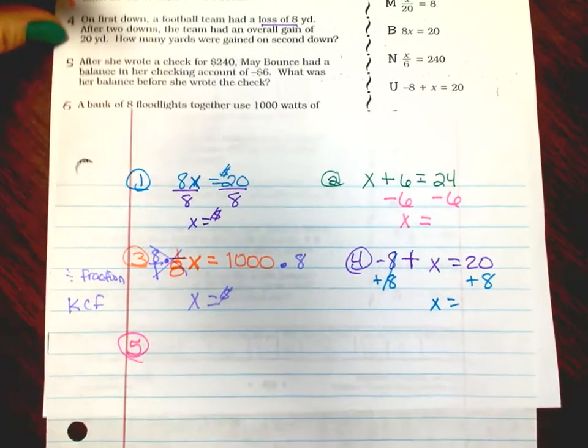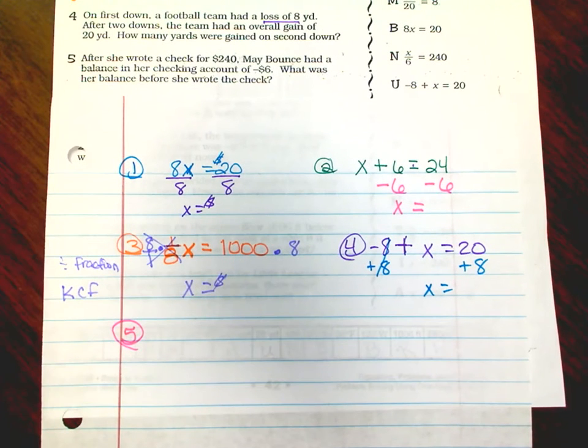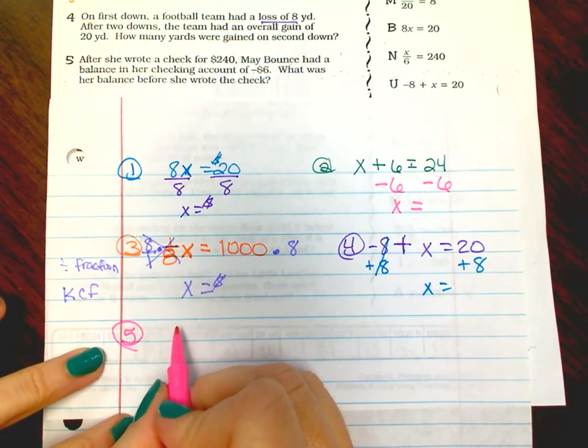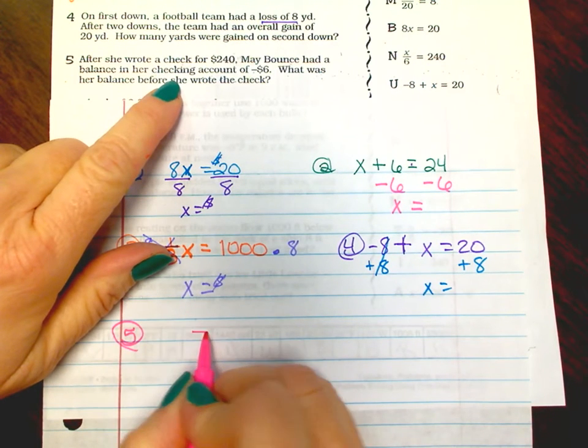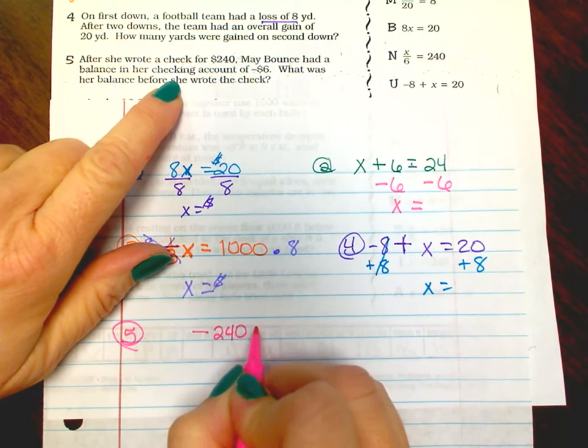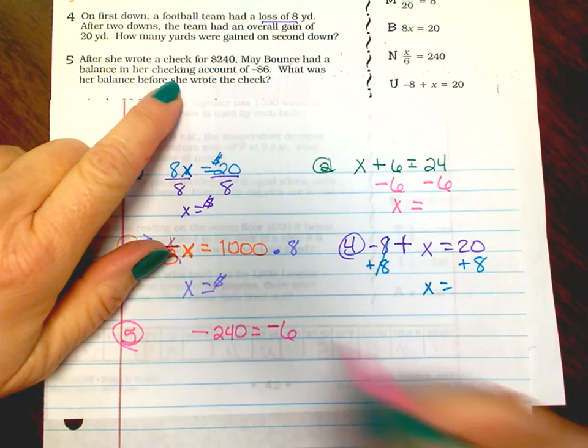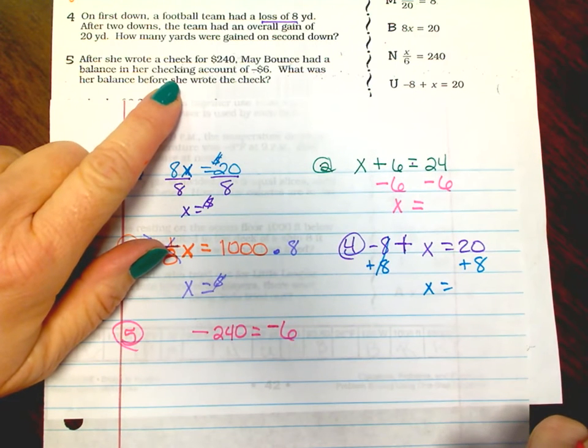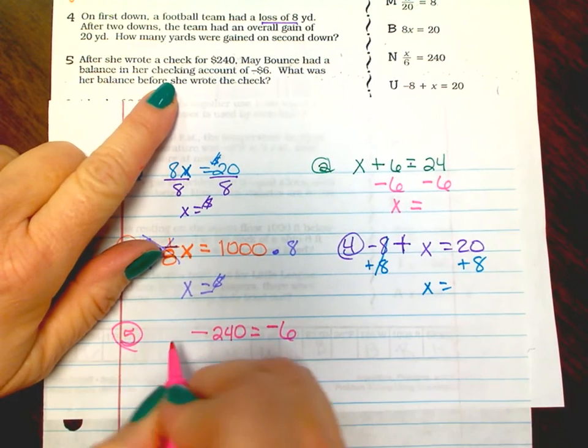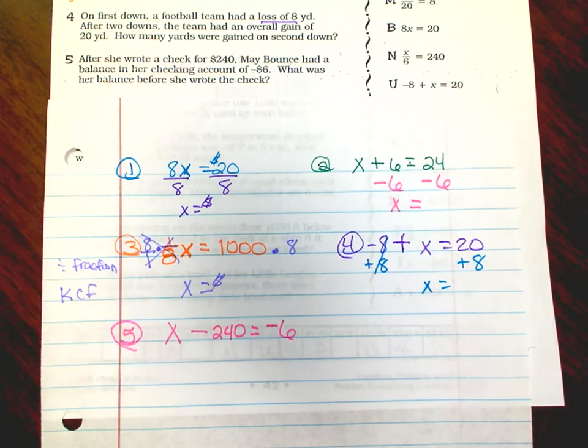Number five: after she wrote a check for 240 dollars, May Bounce had a balance in her checking account of negative six dollars. What was her balance before she wrote the check? Okay, so she wrote a check. When you write a check you're spending money, and she had a negative six in her banking account.